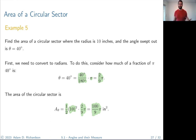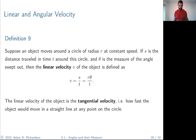Moving along — that's the area of a circular sector. We also talked about arc length. Now let's talk about linear and angular velocity, which a lot of you in STEM degrees — engineering, computer science — will encounter.